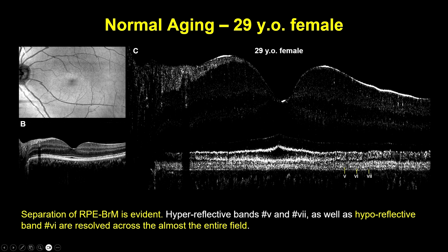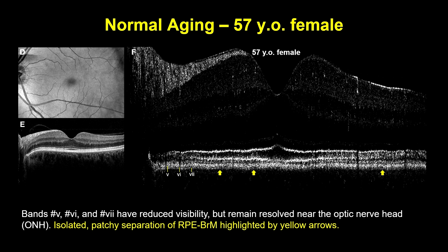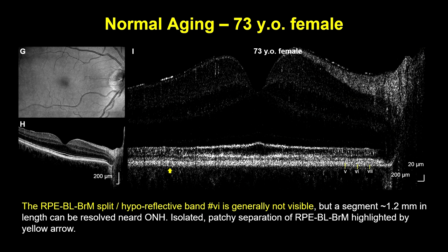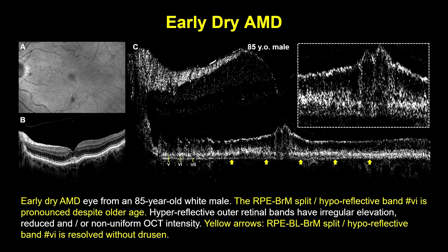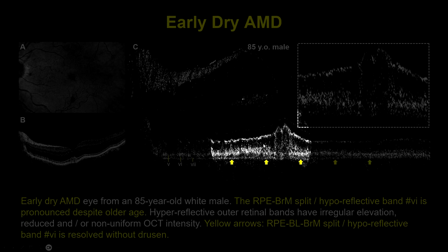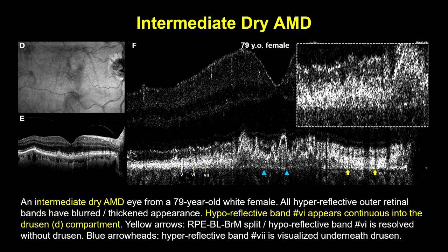You can see this across the entire range of the image. As we go to older subjects, we start to lose this hyper-reflective feature. In a normal older subject, this hyper-reflective feature is almost entirely not visible throughout the scan. In contrast, if we look at early AMD, we see this feature again across the entire image. And also in intermediate AMD, the hyper-reflective feature is continuous into the drusen compartment.